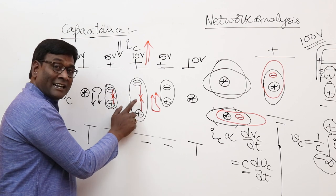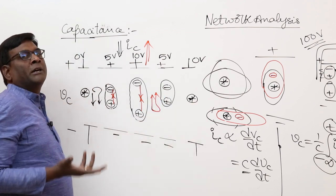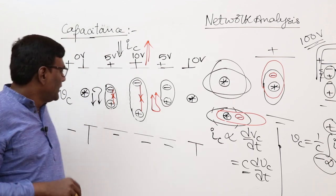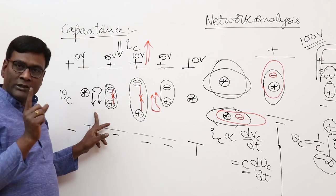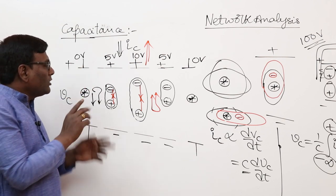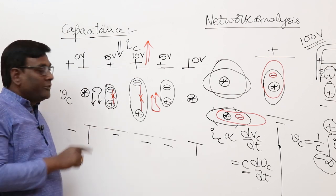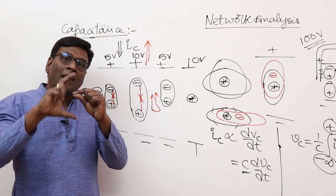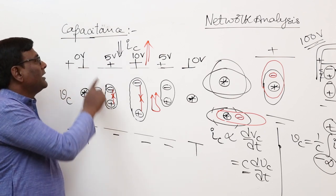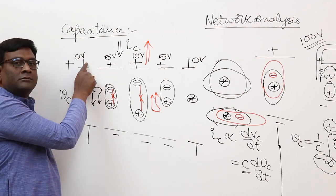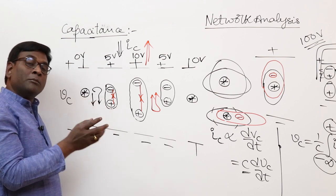So the conclusions from this discussion: first, in a capacitor, current flows only when there is a voltage variation — without voltage variation, current will not flow. Second, the electrons in the insulator never actually come out; only the electron orbits displace. This is called displacement current. Up to the plates, conduction current flows (handled by electron flow); inside the insulator, displacement current flows due to the displacement of orbits.